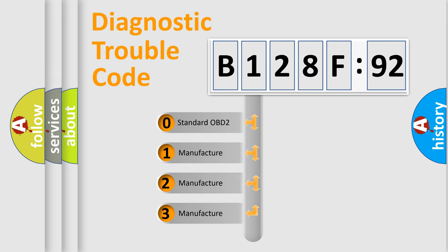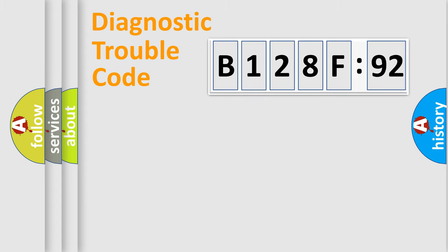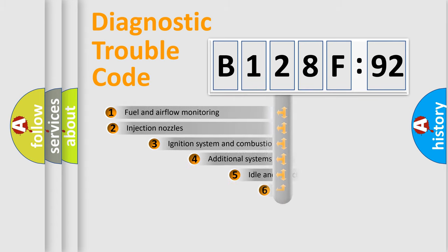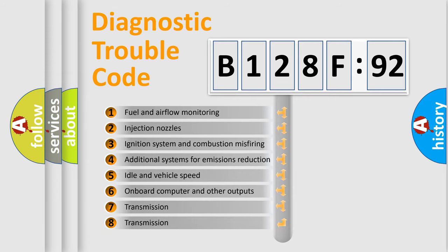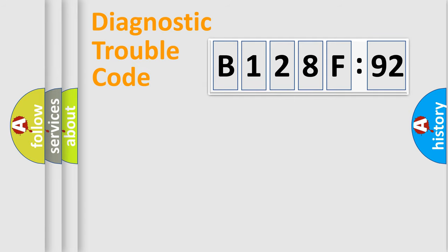If the second character is expressed as zero, it is a standardized error. In the case of numbers 1, 2, 3, it is a more specific expression of the car-specific error. The third character specifies a subset of errors. The distribution shown is valid only for the standardized DTC code. Only the last two characters define the specific fault of the group.